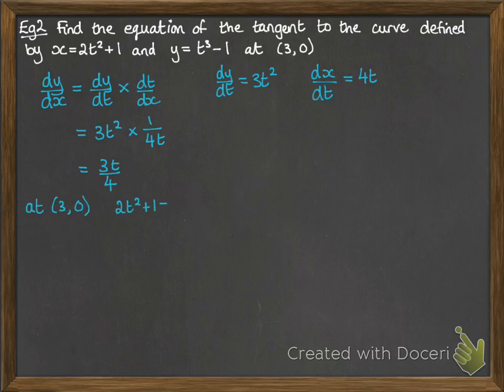So then at the point (3, 0), we need to work out what t would be to be able to substitute it into dy by dx. So the x equation there, the 2t squared plus 1 equals 3, gives us that t could possibly be plus or minus 1. We also need to check it against the y equation. This one gives us that t equals 1, and we have to pick the value of t that satisfies both of those things, so it can't be 1 and minus 1, it can only be 1.